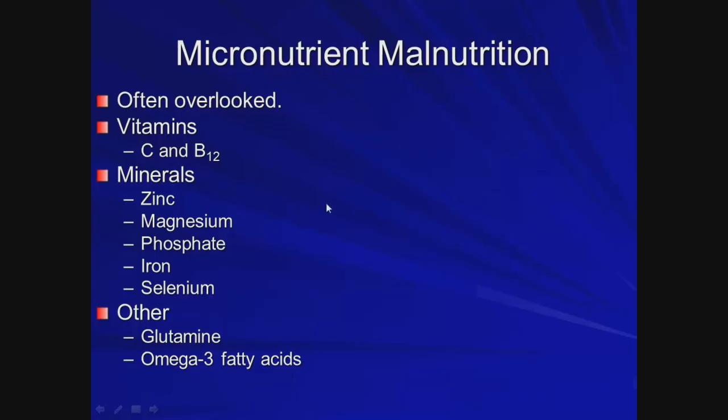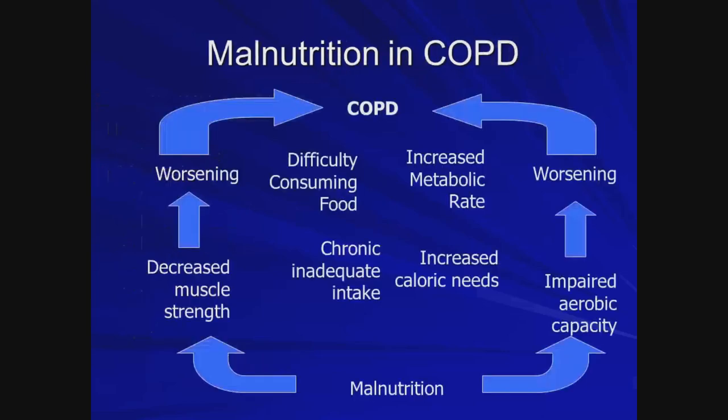We don't focus heavily on micronutrients, but they are important. Minerals like magnesium and phosphate are necessary for normal muscle function. In a balanced diet this isn't a problem, but for ICU patients it's a different story — they are often not adequately replenished and don't have the ability for normal intake, so we have to add these minerals to their hyperalimentation system.